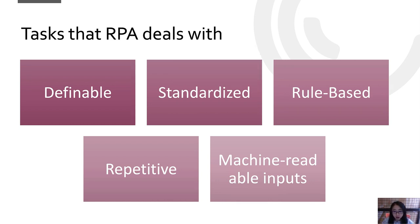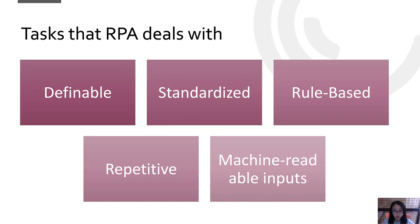The task that you're automating should also be repetitive — otherwise there is no meaning in automating it. You also need to have machine-readable inputs, such as PDFs or Excel files, because you cannot automate something that only exists on paper, unless you first scan the paper and save it as a PDF and then work from there. So these are the premises of a task being automated. As long as an accounting task has these features, it has the potential to be automated.